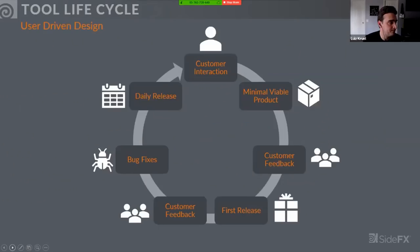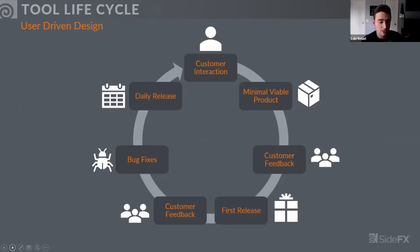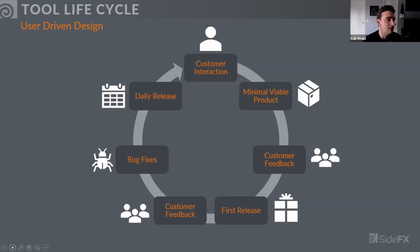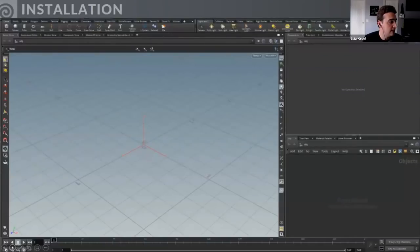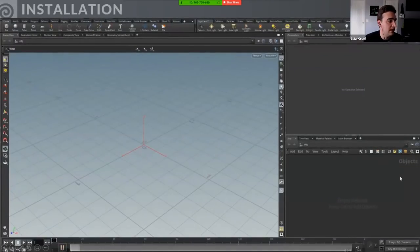These tools are for you and by you. It starts from you saying 'wouldn't it be cool if we had this tool to make rock generation better.' We then work with you, generate a minimal viable product, get feedback, make a release, get more feedback, fix bugs, and repeat that loop. For the most part it comes from you guys driving us and telling us what you need.